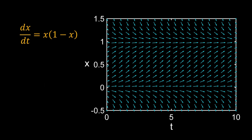You must have noticed that for x = 1, the slope of the arrows on the direction field is 0. In other words, dx/dt = 0 for x = 1. That means if x is at 1, it will not change with time. This is called a steady state — once a system has reached a steady state, it does not change with time.